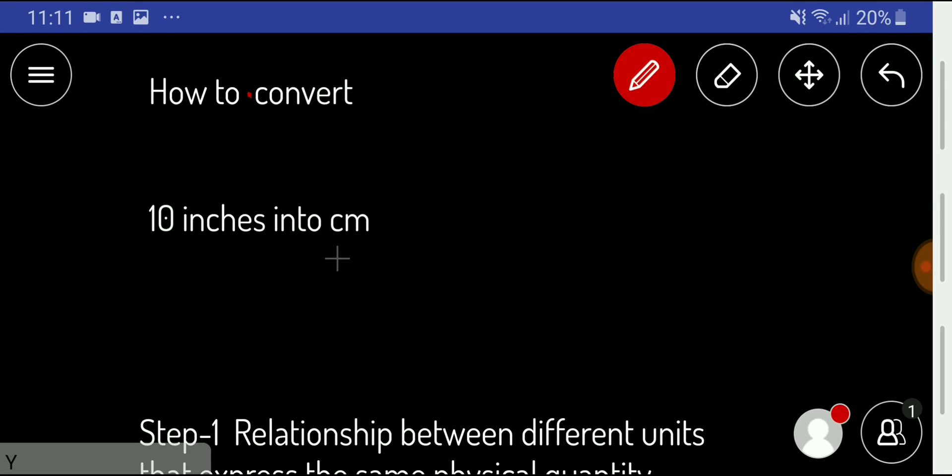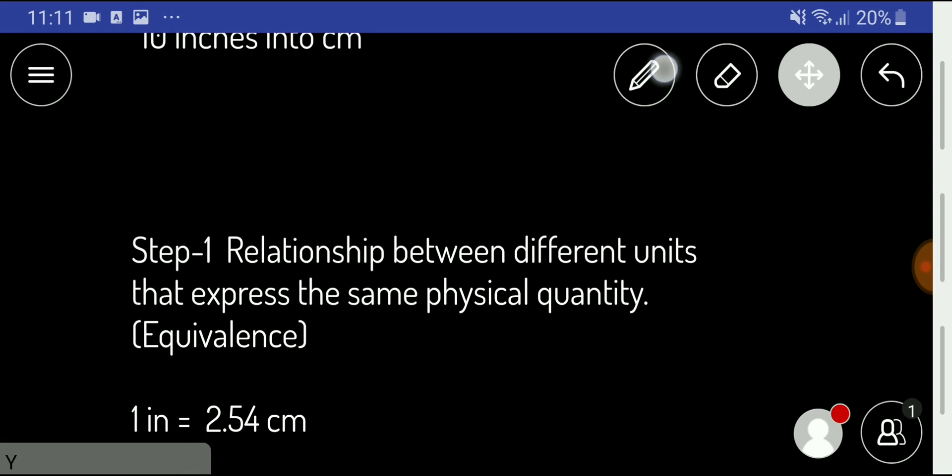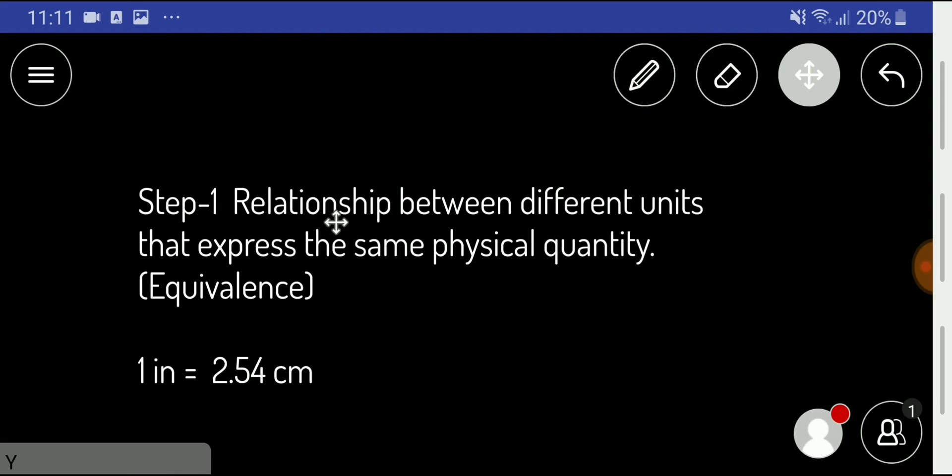At first, we have to find out a relation between inches and centimeters. That is the equivalence relationship. We have to find out the relationship between different units that express the same physical quantity, or equivalence.